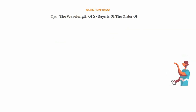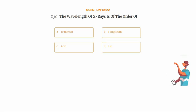Question number 10. The wavelength of X-rays is of the order of. Option A: 10 micron. Option B: 1 angstrom. Option C: 1 centimeter. Option D: 1 meter.